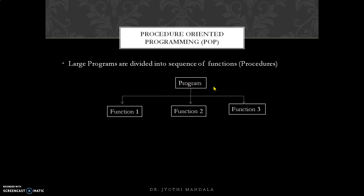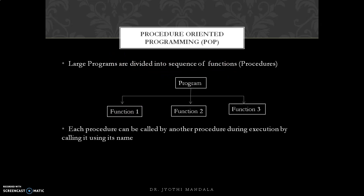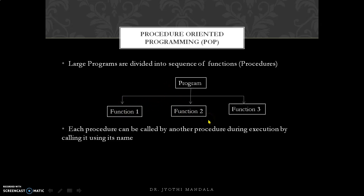As a simple example, if you want to perform arithmetic operations, logical operations, and bitwise operations — function 1 can perform arithmetic operations, function 2 can perform logical operations, and function 3 can perform bitwise operations. This entire set is considered one program with a main function. Each procedure can call another procedure during execution simply by using its name — for example, a function named 'arithmetic operations' can be called by any other function as required.